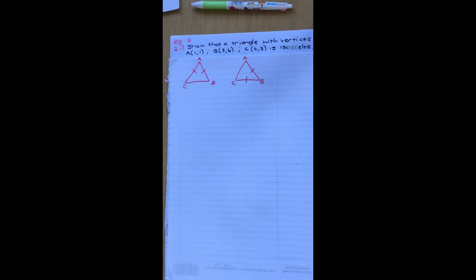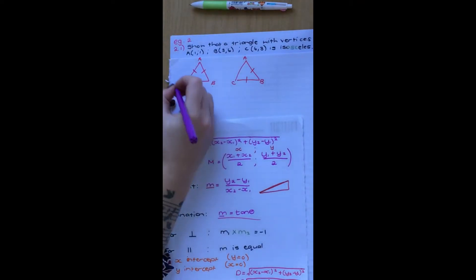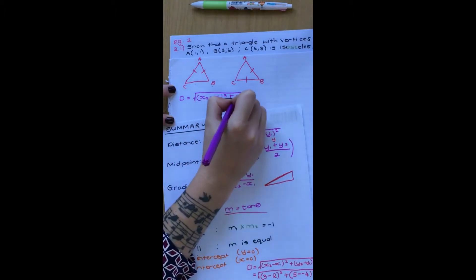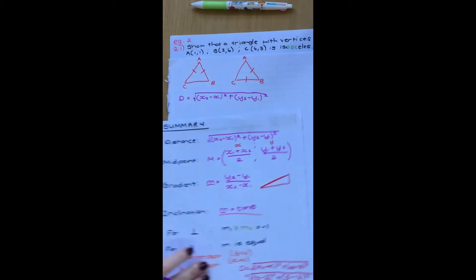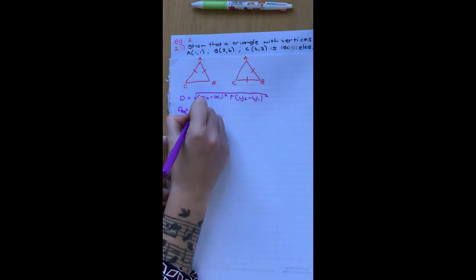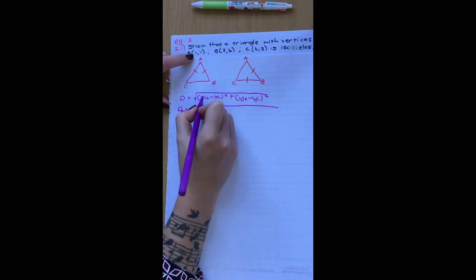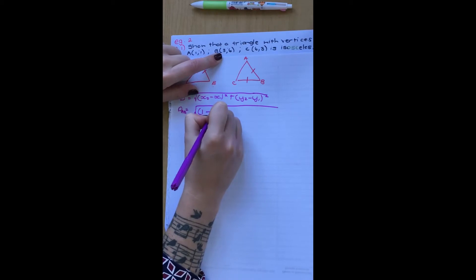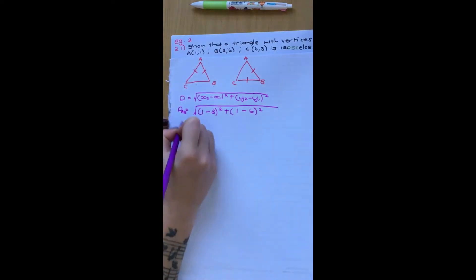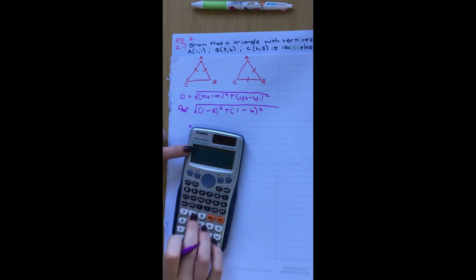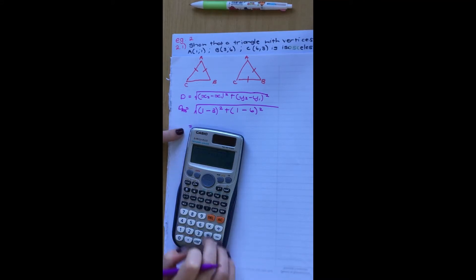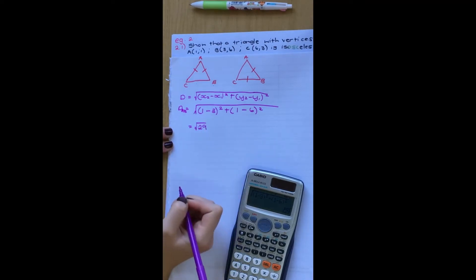Remember the distance formula — I've got it here: distance equals the square root of (x₂ − x₁)² + (y₂ − y₁)². Let's fill in these points. Let's try A and B. Distance AB will be the square root of — starting with this x: 1 minus 3, squared, plus 1 minus 6, squared. That gives us root 29.